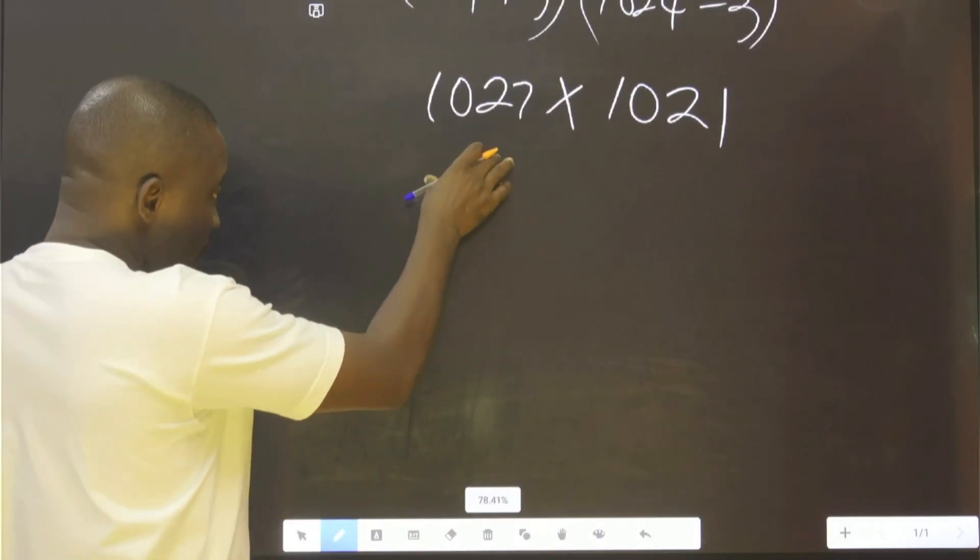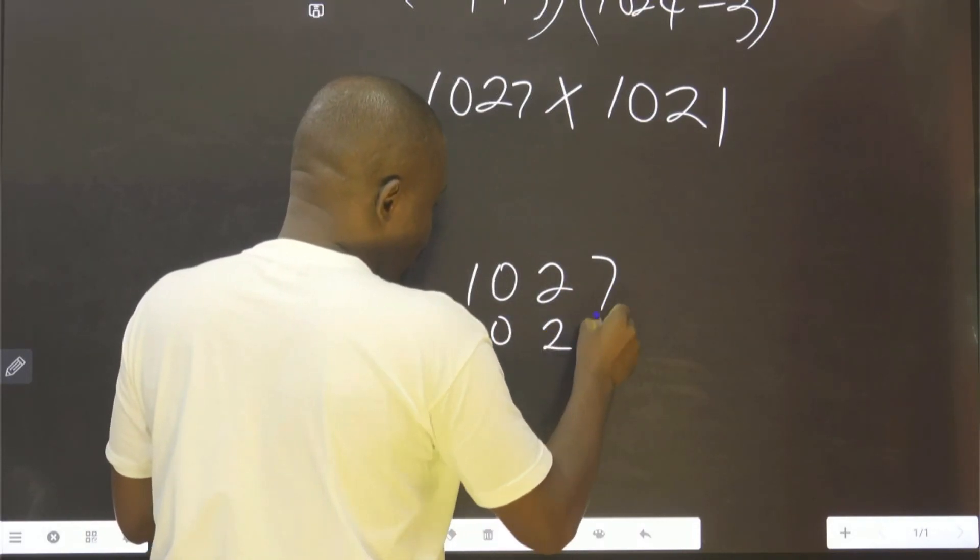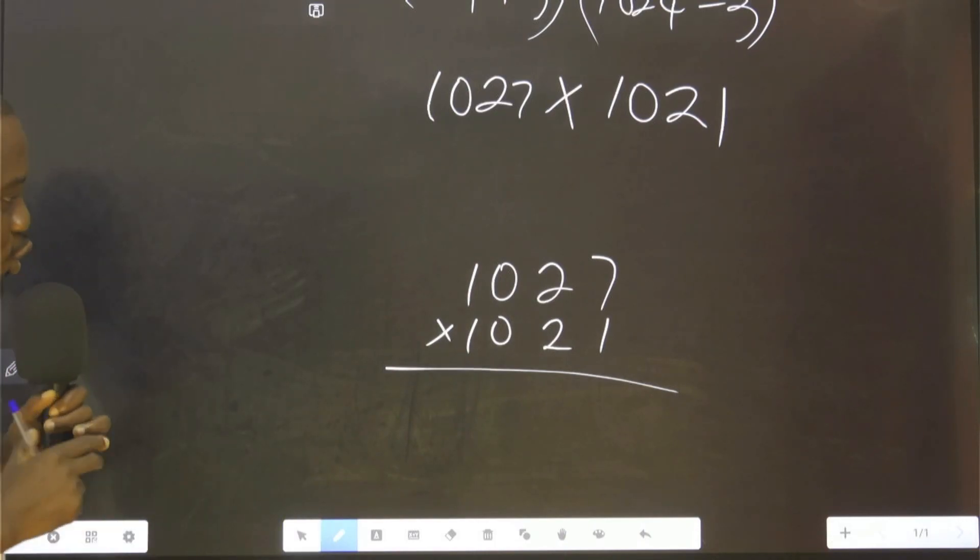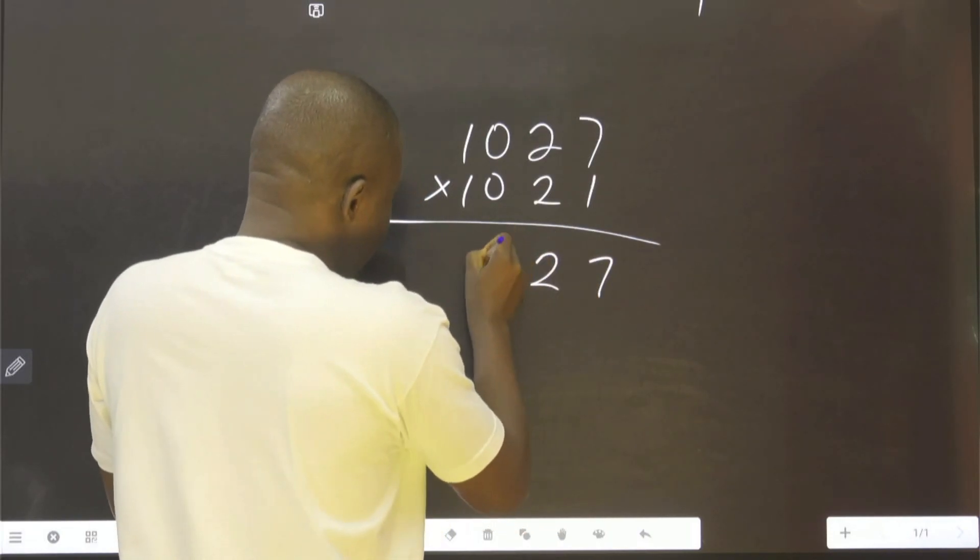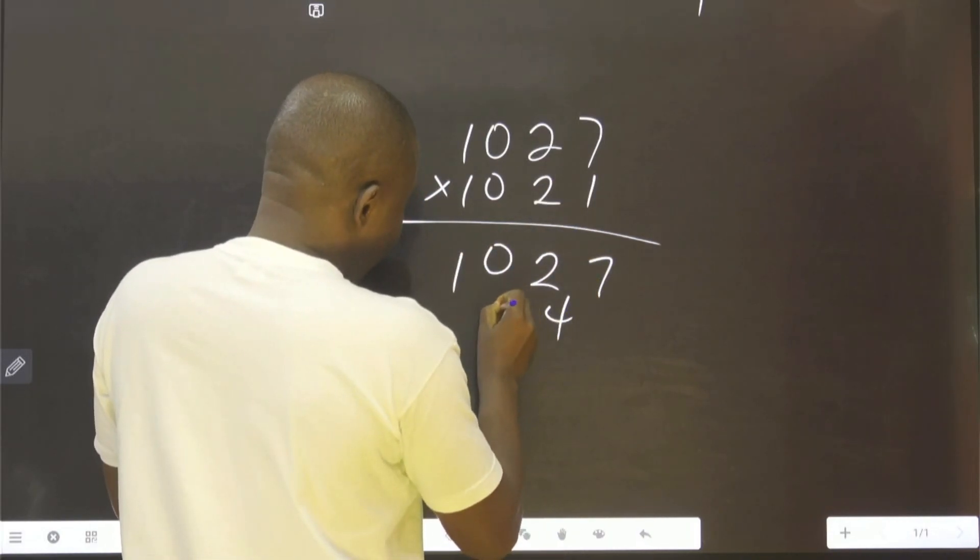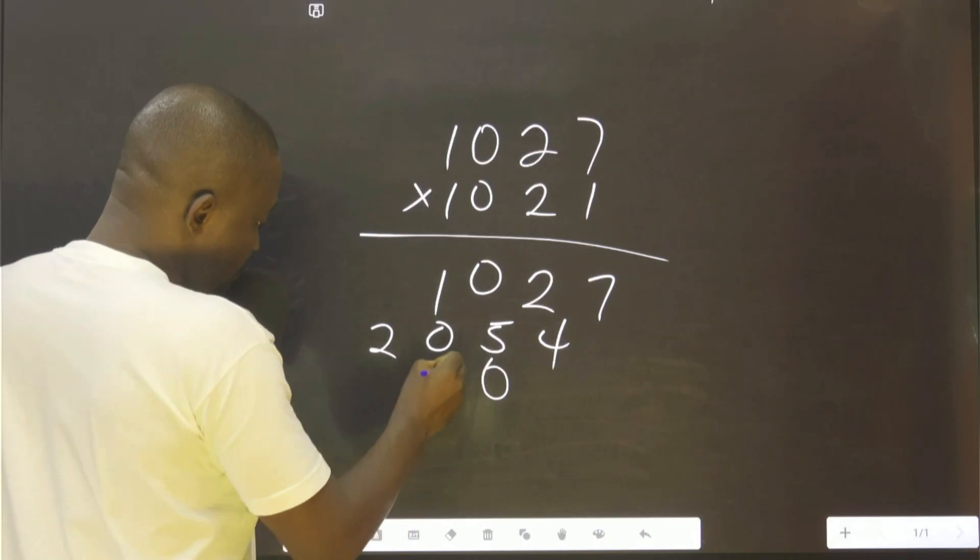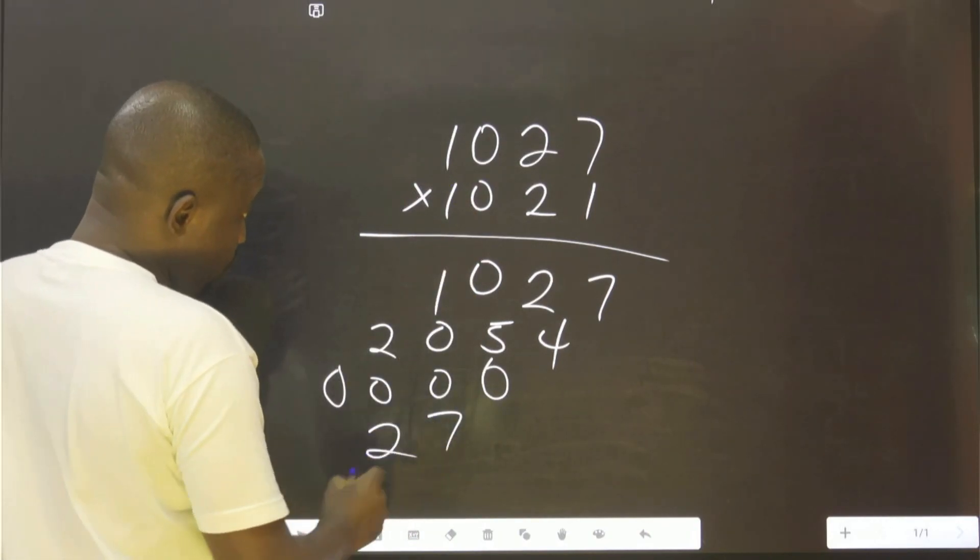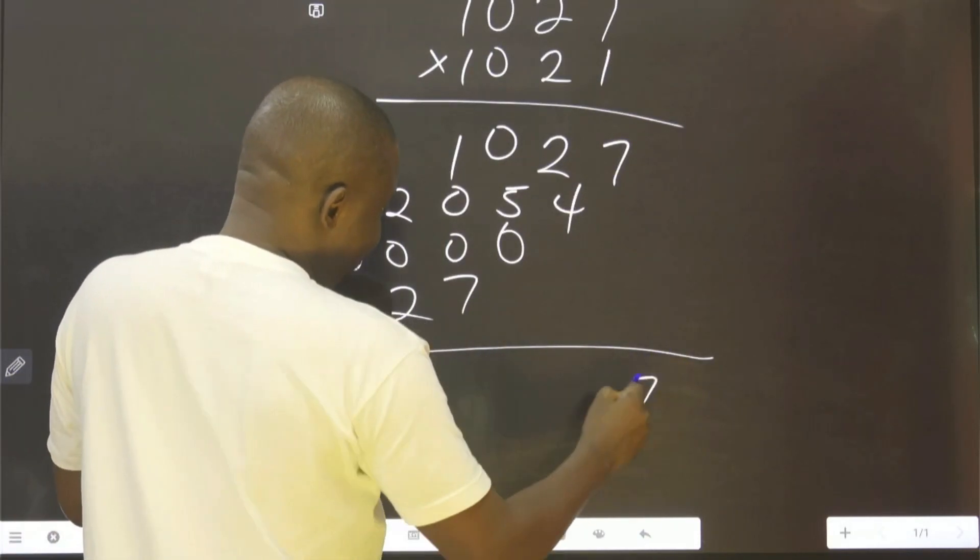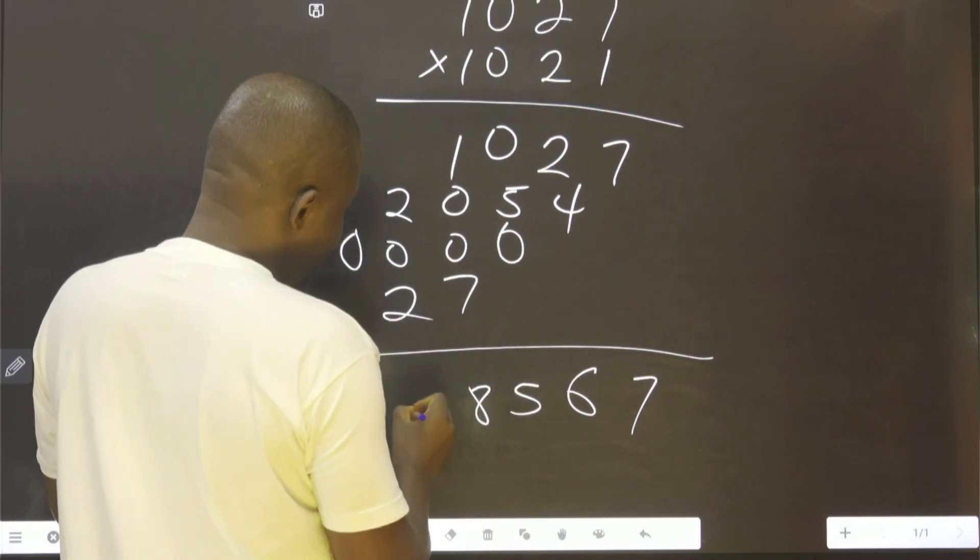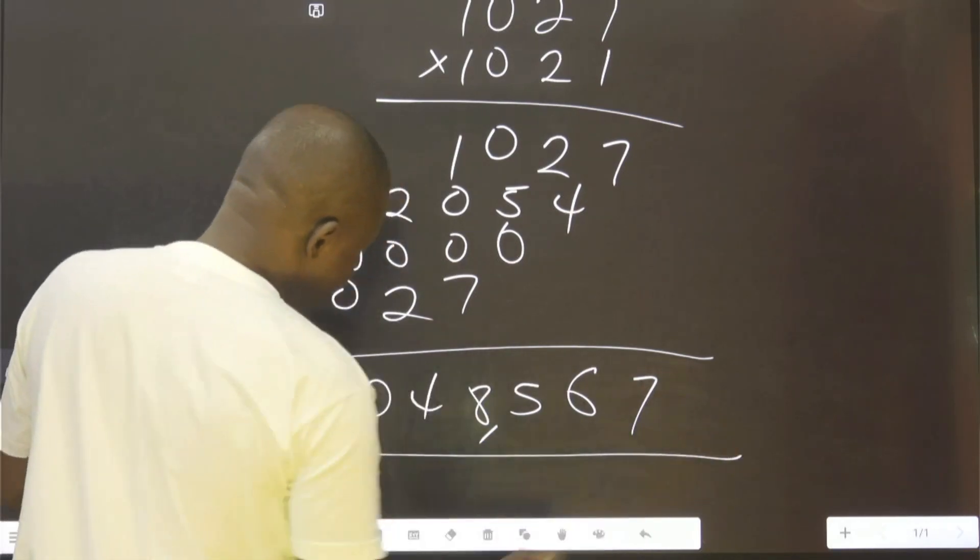So what this one requires us to do now is to do multiplication, because we are asked not to use a calculator. This is 7201, this is 450. This will give us 2, we use 0, that is 0, 0, 0. We use 17201. If you look at this now, this is 1,048,567, which is our answer.